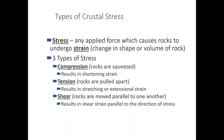Tension is when rocks are pulled apart — they extend and increase in length. For example, Nevada would be 100 miles shorter if tensional forces hadn't stretched it apart. Shear involves rocks moving parallel to one another, going the same or different directions. The strain is parallel to the direction of stress — a good example is the San Andreas Fault and its associated faults.